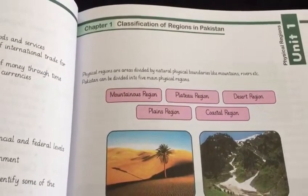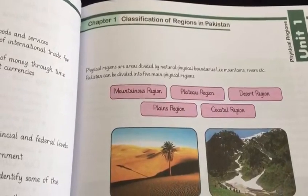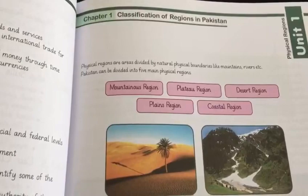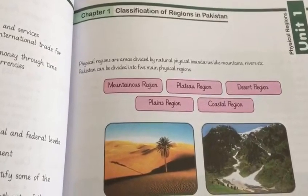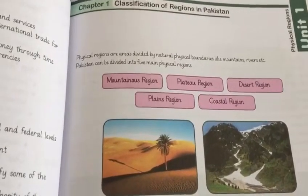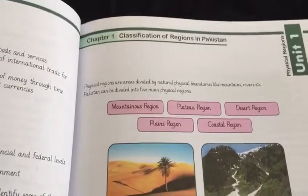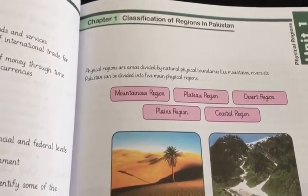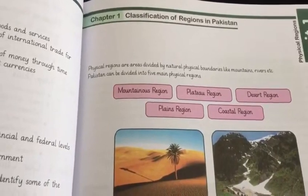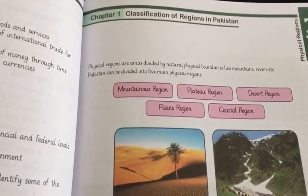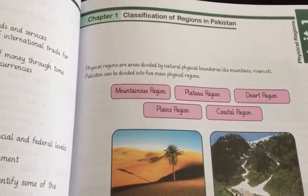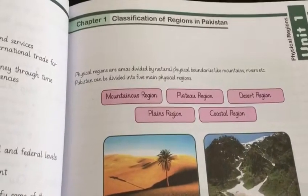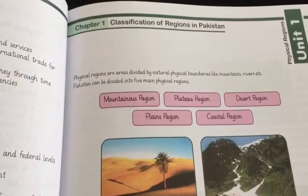In Pakistan we do not have only one form of land. It is divided into deserts, mountains, plateaus, plain areas, and rivers. So in this chapter we will be classifying and reading about the division of regions in Pakistan.